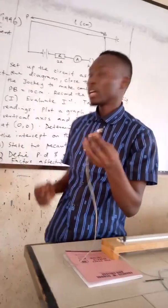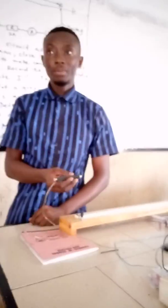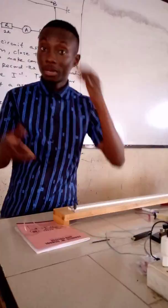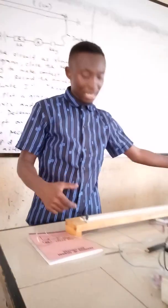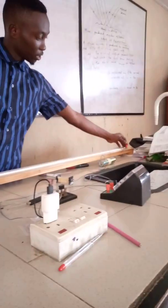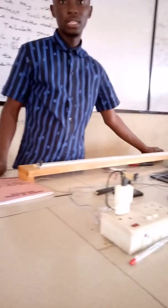Of course we know what a jockey is. A jockey is used to make contact along the wire of a potentiometer. A potentiometer is just the length of a wire being attached to a meter rule which has two points, the positive terminal and the negative wire terminal.